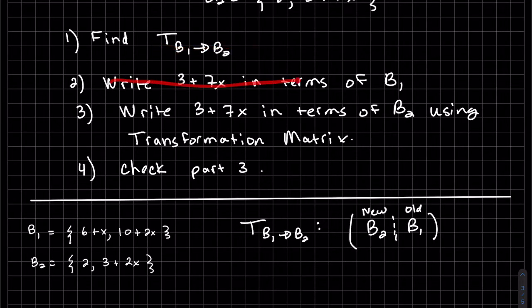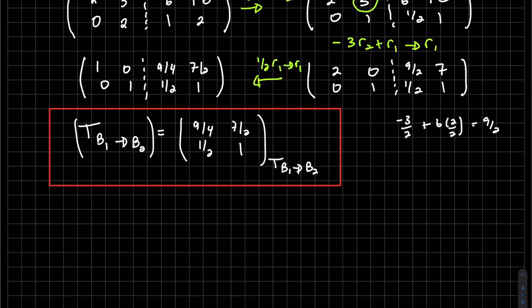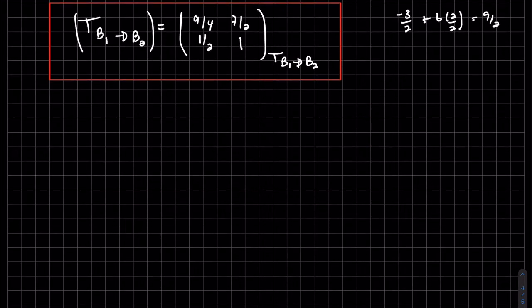So we found our transformation matrix from B1 to B2. We're going to write 3 + 7x in terms of B1, and then we're going to use the transformation matrix to write that in terms of B2. So it doesn't say to use the transformation matrix because we don't have a transformation to convert to B1. This converts to B2, so that'll be part C.